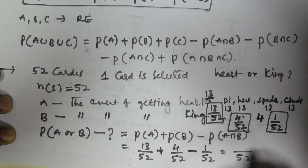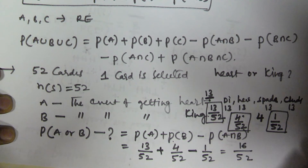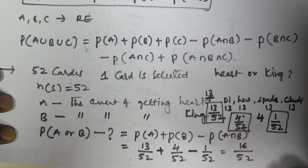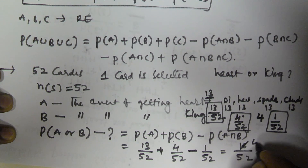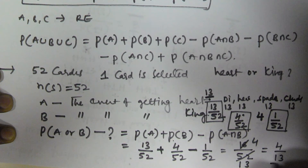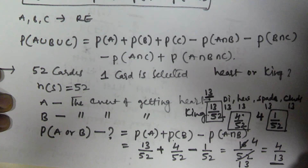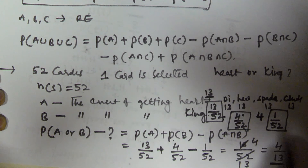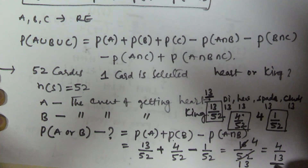That gives us sixteen by fifty-two, which simplifies to four by thirteen. So the probability of getting a heart or a king when drawing a single card from a deck of fifty-two is four by thirteen. I hope you got this. Thank you very much for watching this video and please subscribe to my channel.